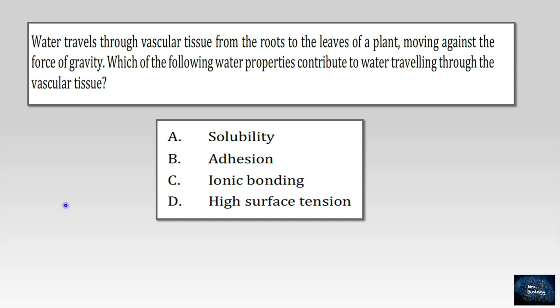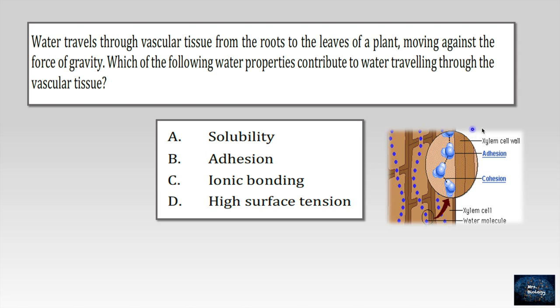What about this question? Water travels through vascular tissue from the roots to the leaves of a plant moving against the force of gravity. Which of the following water properties contribute to water traveling through the vascular tissue. Let's see this. The stickiness between water molecules and the xylem vessel wall is called adhesion. Okay, it's not only that. Adhesion and cohesion work together in the xylem to pull the water molecules from the roots to the stem. Let's see the choices. Solubility, adhesion, ionic bonding, high surface tension. Yes, we said both adhesion and cohesion cooperate to do this work, but since they did not mention cohesion, we will go with choice B, which is adhesion.